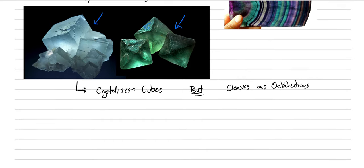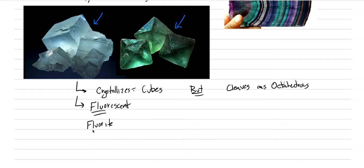A couple of other interesting mineralogical properties of fluorite: it fluoresces — it is fluorescent — and in fact the name fluorescence was first identified in the mineral fluorite, hence the name. It is also thermoluminescent: if you heat fluorite on a stove top you'll see it start to glow, so it has interesting optical and electronic properties.